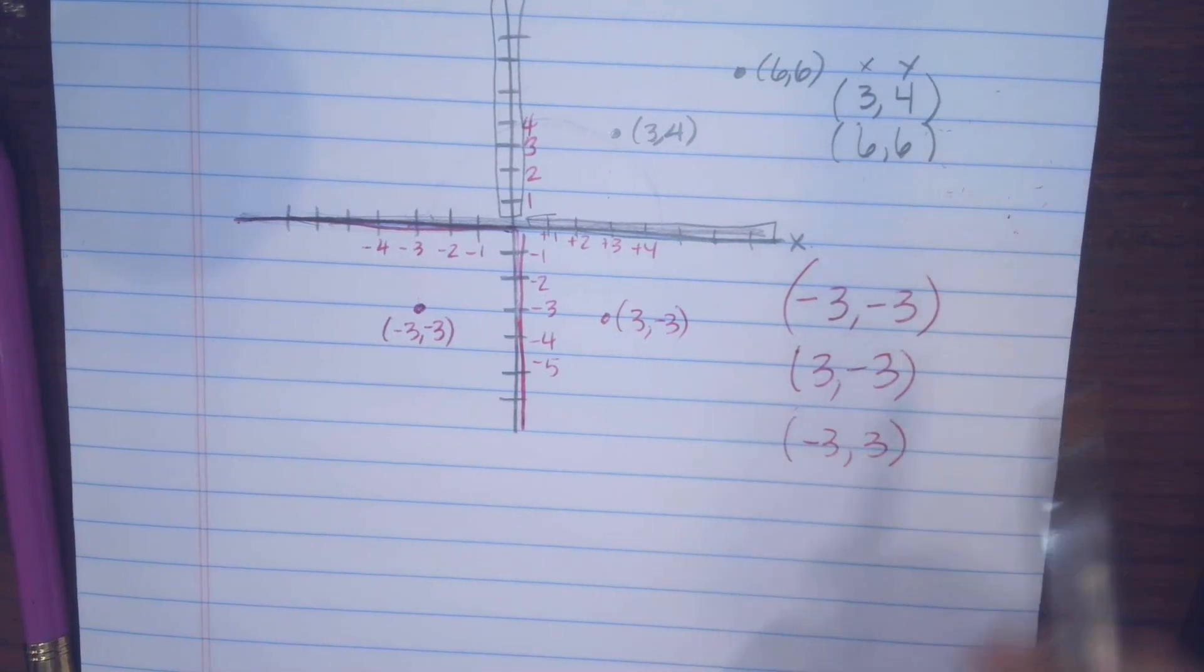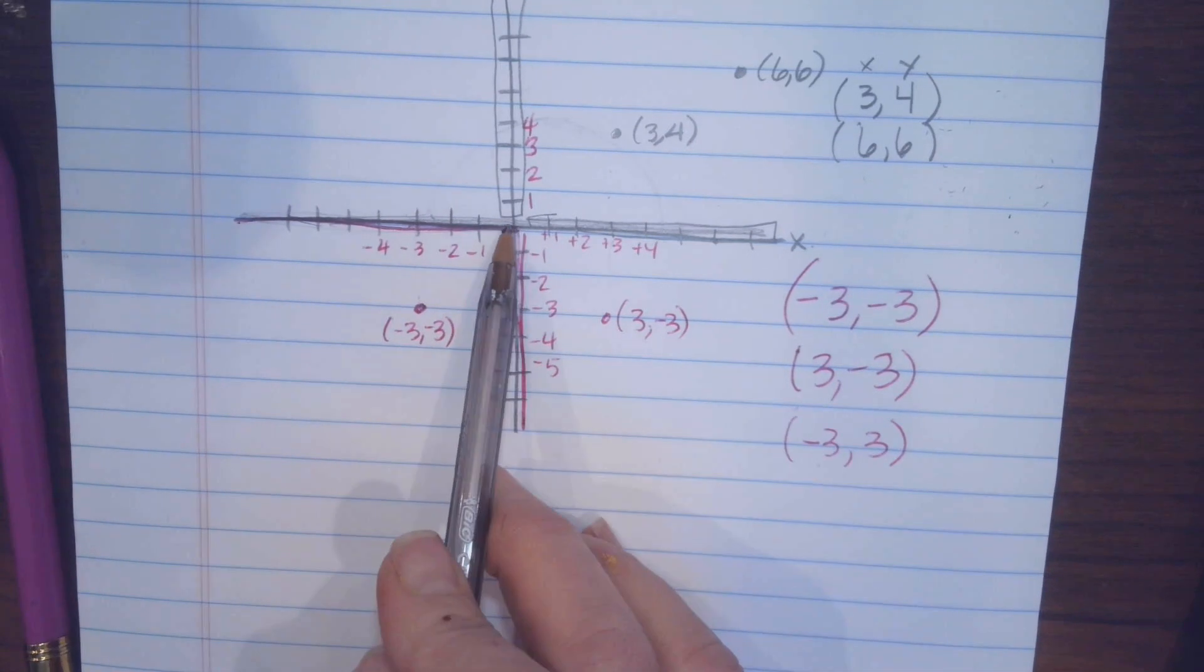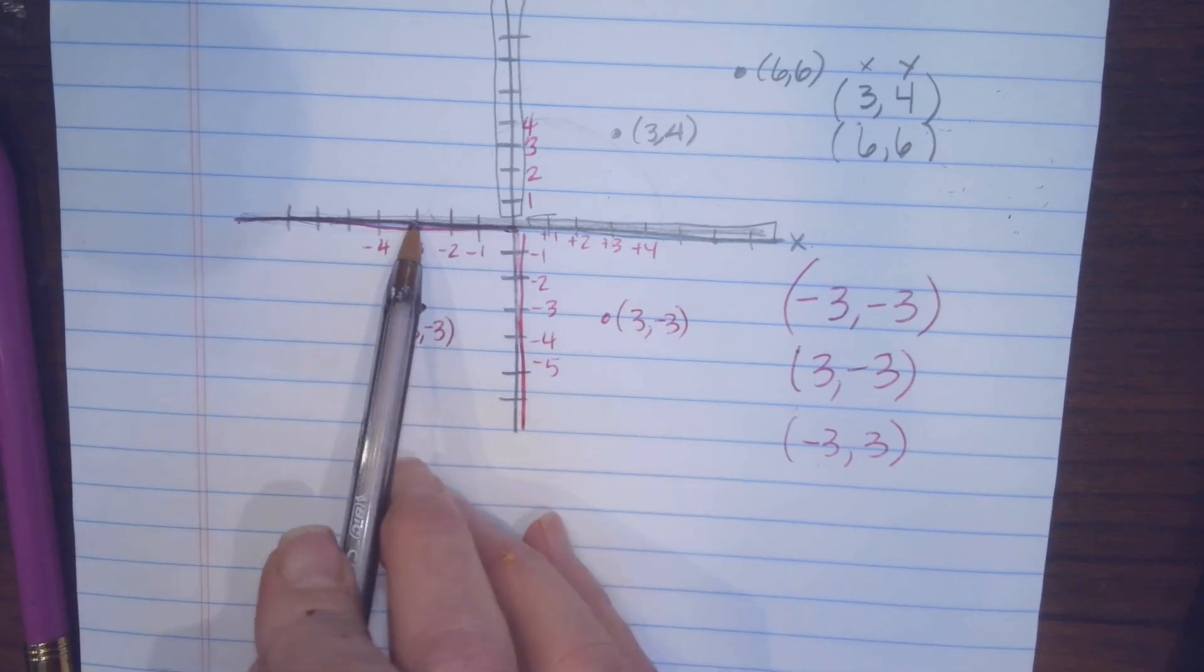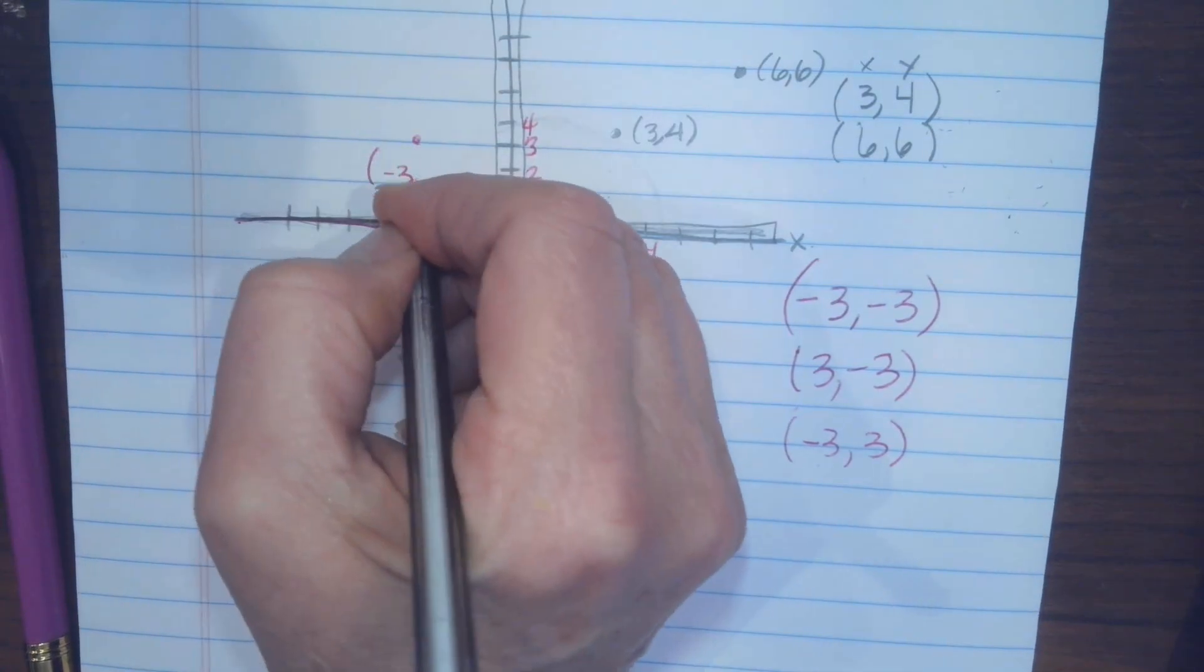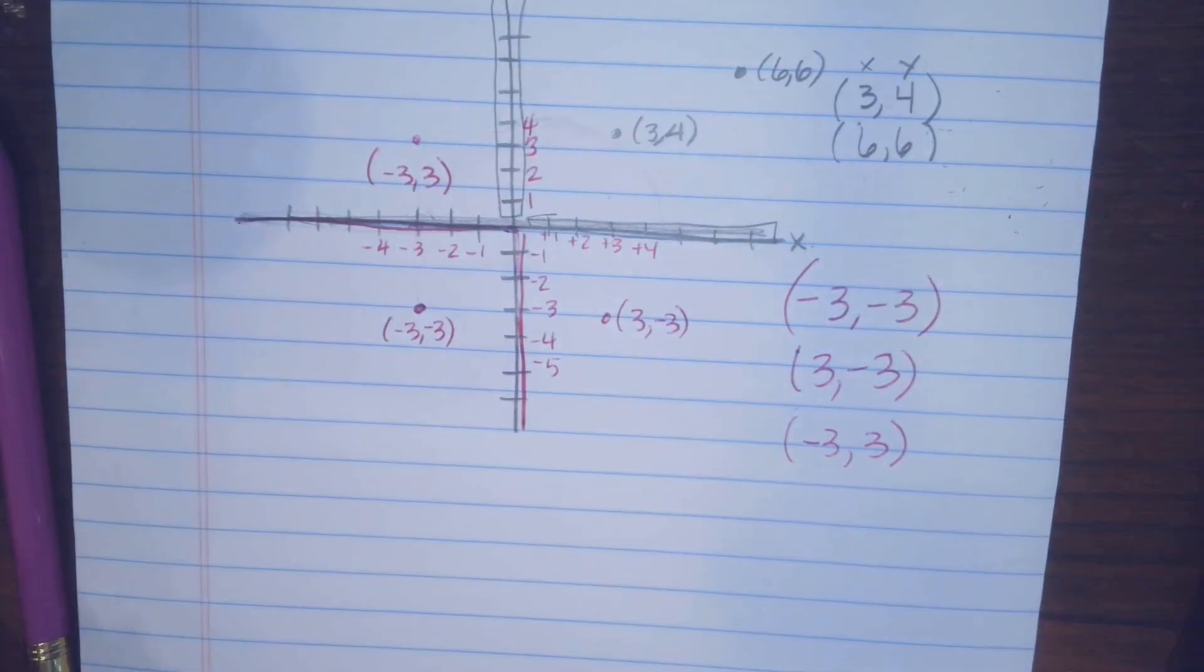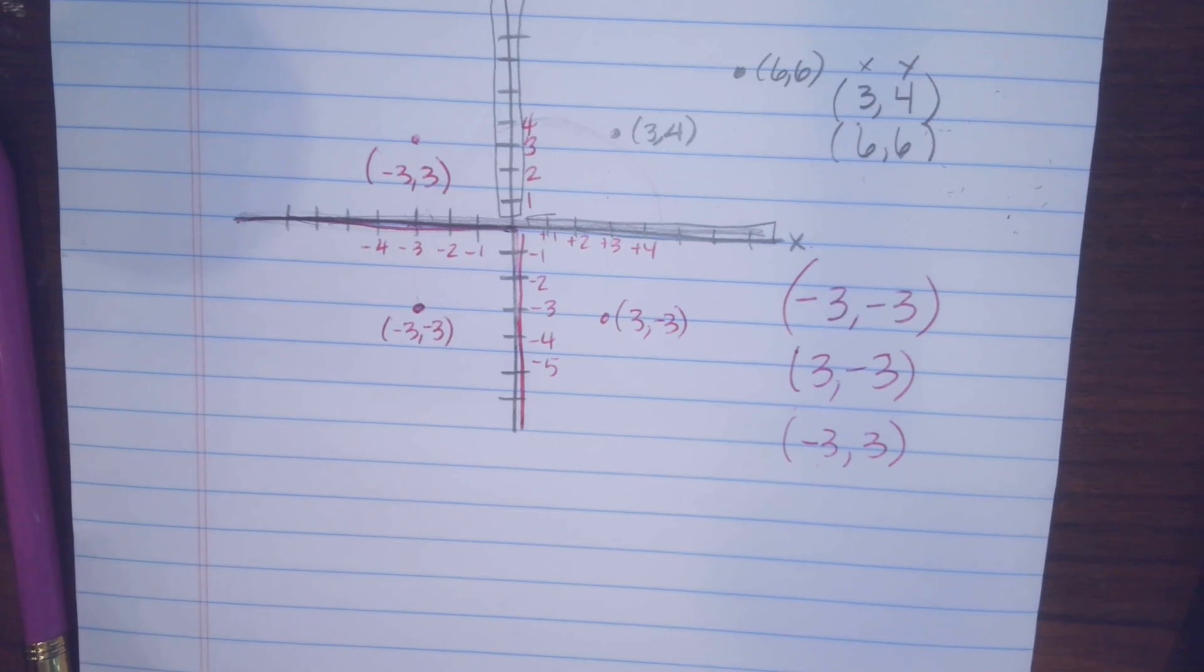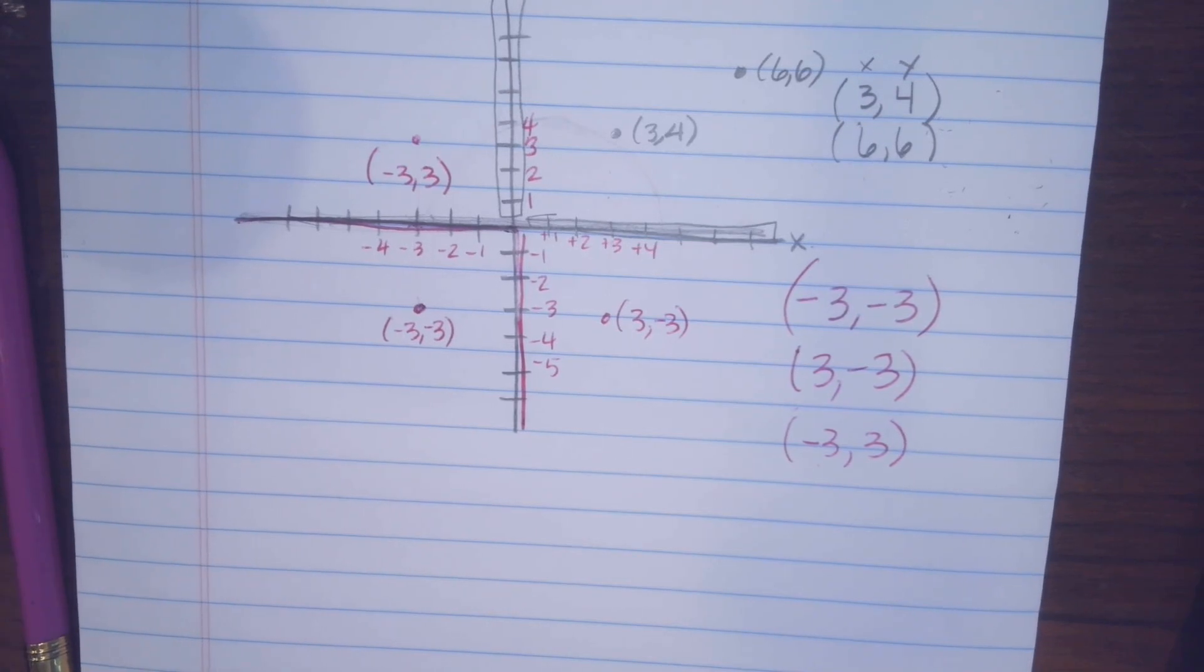If I had a negative first, I would go this way, and then I'd go up because my other 3 is positive. So this would be (-3, 3). Make sense? Okay. Yeah.